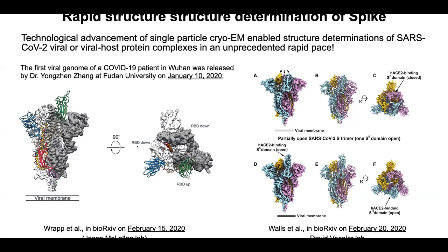During the COVID-19 outbreak, the first viral genome sequence was released on January 10th, 2020. Within literally three to five weeks, the structure of the spike protein was already determined. This showcased the power of single-particle structural biology and how it has really changed the field — we can now rapidly determine structures of protein complexes, enabling a flood of spike protein structural studies.